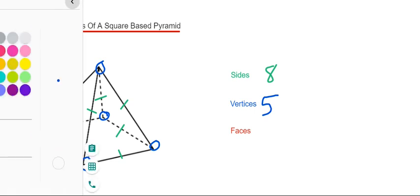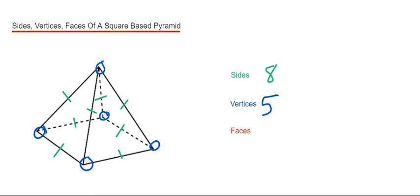Finally, we've just got to do our faces. The faces are the surfaces which make the shape. We've got a square face at the bottom—that's one. And then we've got our triangular ones: two, three, four...